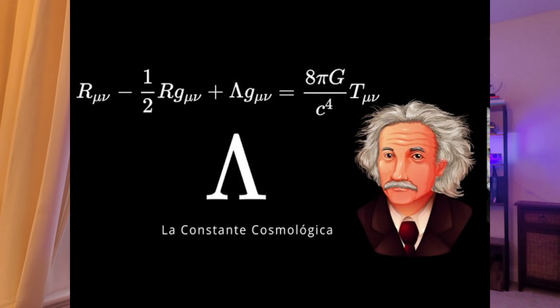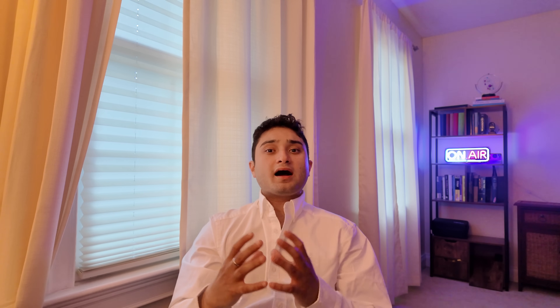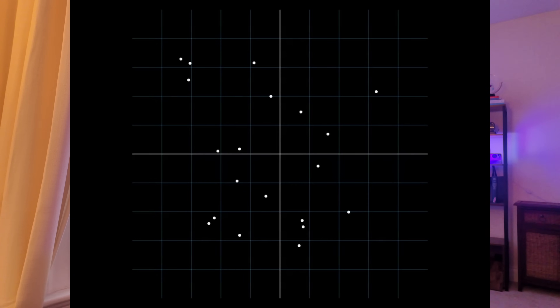Now let's talk about that lambda term — the cosmological constant. Einstein originally added it to stop the universe from expanding or collapsing. At the time, people thought the universe was static, so he needed some kind of anti-gravity term to hold things in place. But once Hubble showed that the universe was expanding, Einstein called this term his biggest blunder. The irony: decades later, we found out that expansion isn't slowing down — it's accelerating. That acceleration is what we now call dark energy, and it behaves just like a cosmological constant.